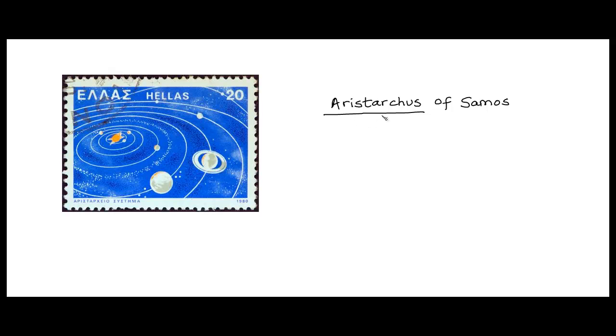Aristarchus was a Greek from the 3rd century BCE who was from the Greek island of Samos which is near Turkey. Here is a stamp printed in Greece in honor of Aristarchus and his heliocentric views.